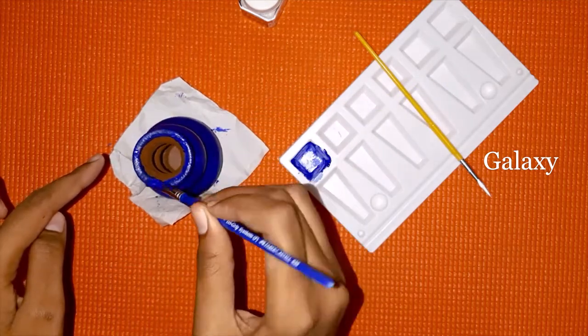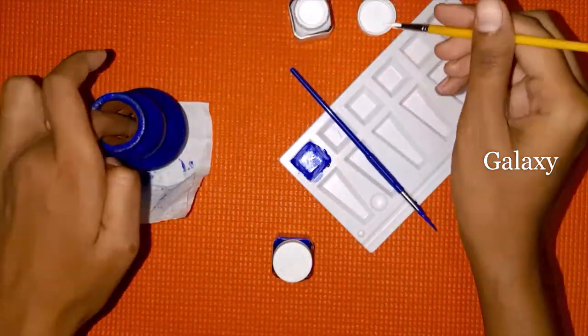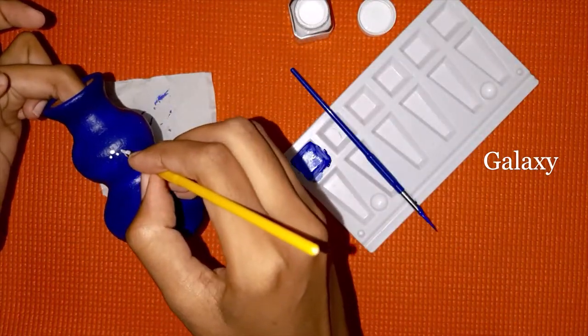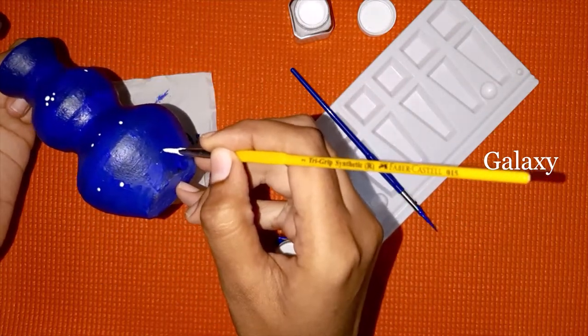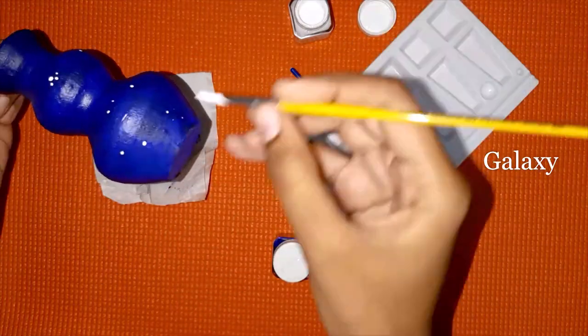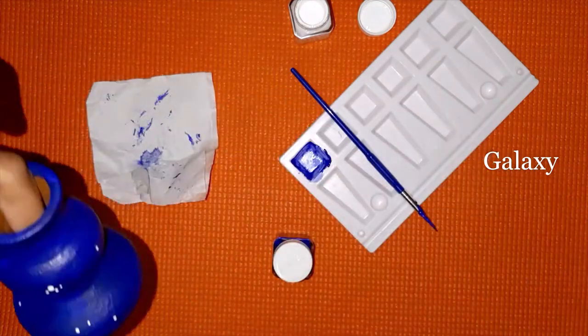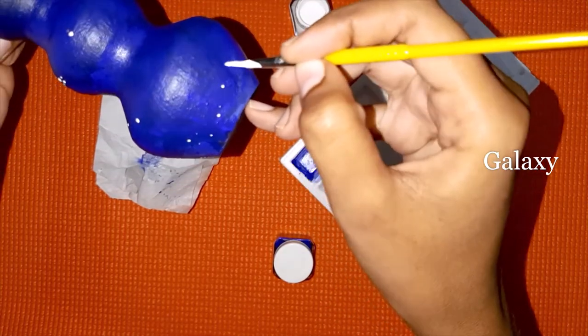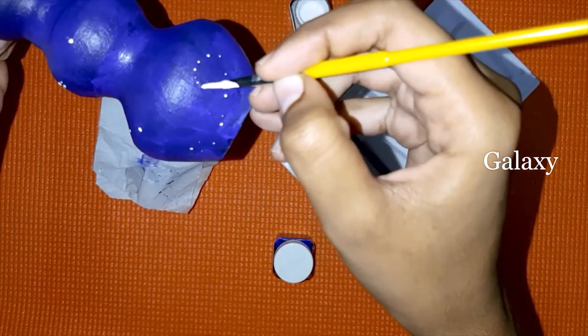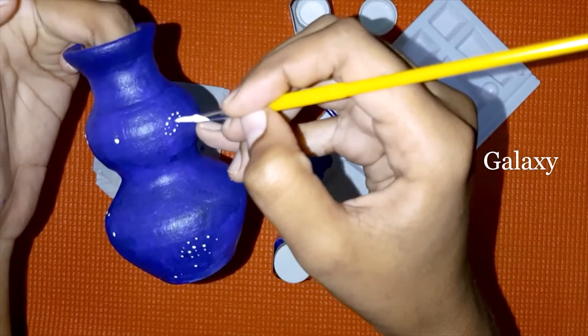Remove the pot, and for the stars, I'm using this white color. Just keep some random dots here and there. I'm using this Faber-Castell size 15 brush. After this, for getting small stars, I'm using some safety pins. You can use bobby pins or whichever you are having in your home.